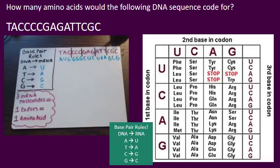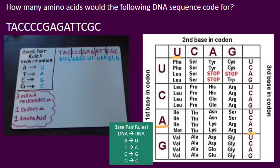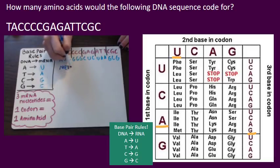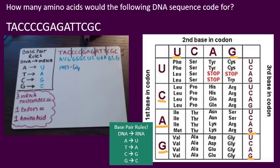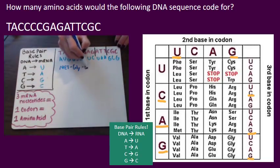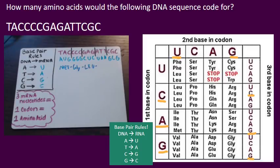We have AUG, which is going to be methionine. Then we have GGG, which is glycine. Then we have CUC — C and then U — which is leucine.